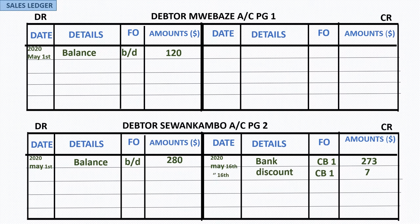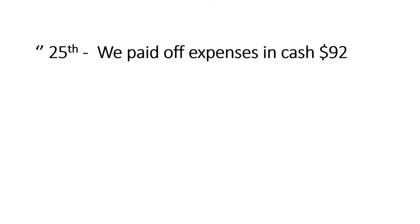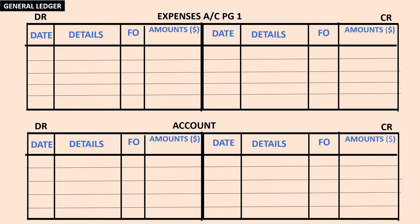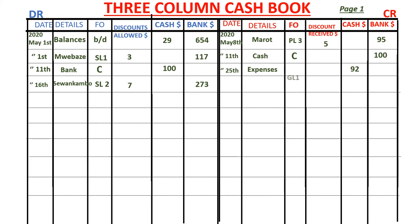On the 25th, we pay off expenses in cash — $92. When we pay expenses in cash, the amount of cash in our business reduces, so we credit the cash account with $92. The expenses account is found in the general ledger. We complete the double entry by debiting the expenses account with $92 in the general ledger. The cash account is in the cash book on page one, and the expenses account is on page one of the general ledger.